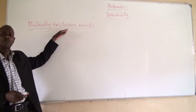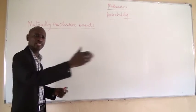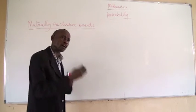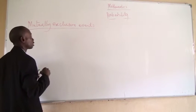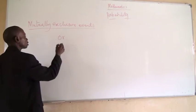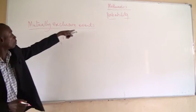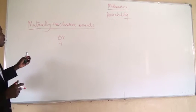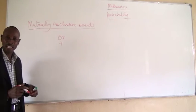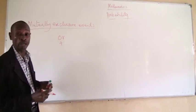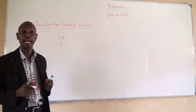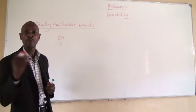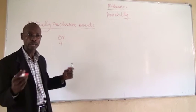Another name for mutually exclusive events is the addition of probability. That is when we introduce the word 'or': it is either this or this. In probability, the word 'or' means addition — it means plus. So another name for mutually exclusive events is addition of probability. We are saying this is a case where two events cannot happen at the same time, and the occurrence of one prevents the occurrence of the other. Let's take the case of a die: if you throw a die once and score 6, it cannot score any other number.